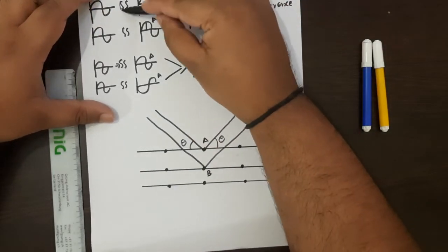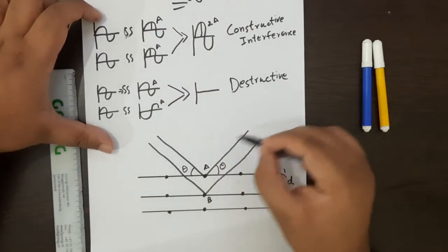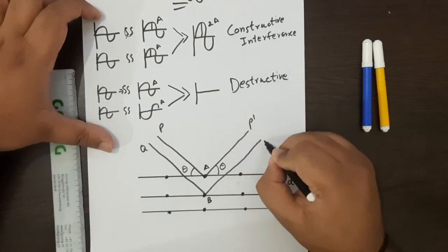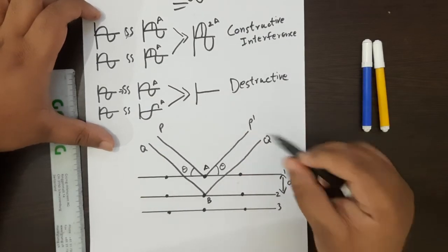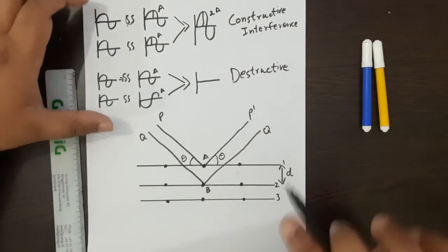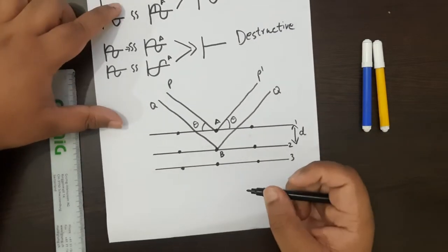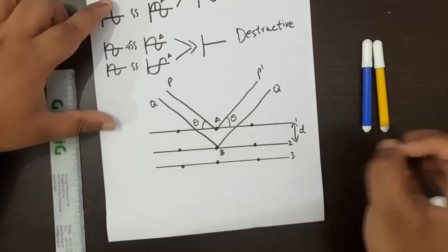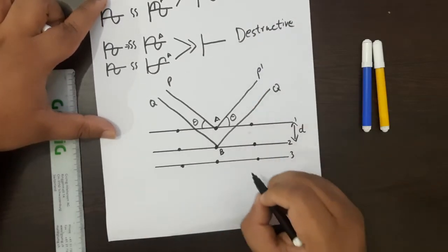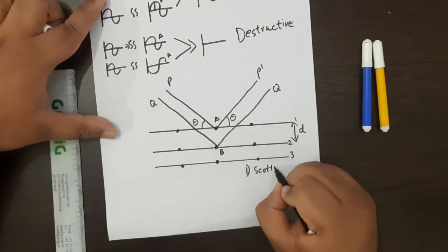A scattering event happened to wave P forming P-dash, and a scattering event happened to wave Q forming Q-dash. Now we have to determine: will it become constructive or destructive interference? There are two conditions that must be met for diffraction to occur. One, there has to be some form of scattering.